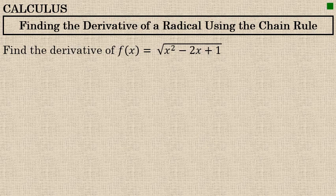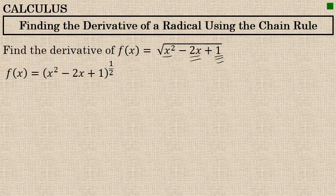When taking the derivative of a radical where there is more than one term under the radical sign, the chain rule should be used. Here I'm going to find the derivative of f of x equals x squared minus 2x plus 1. The first step before differentiating is to rewrite the radical as a fractional exponent. The square root of x squared minus 2x plus 1 is the same thing as x squared minus 2x plus 1 to the 1 half power.